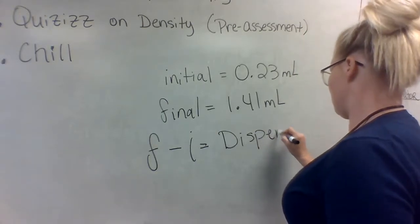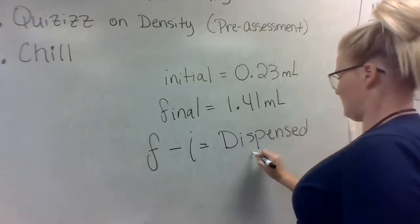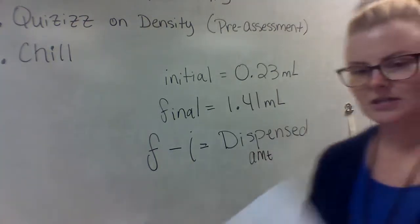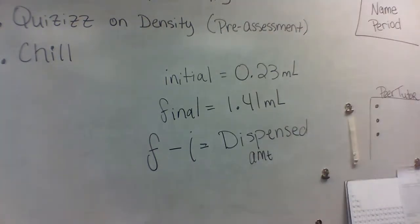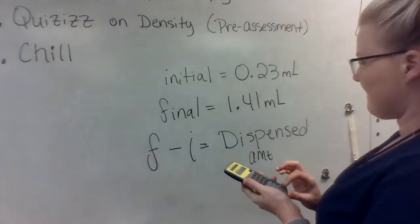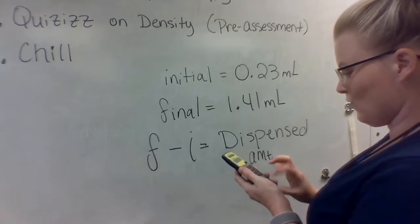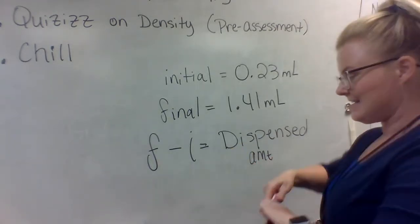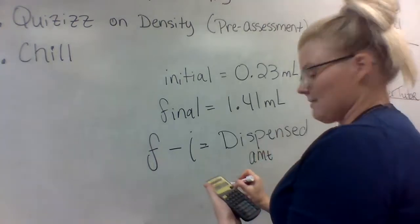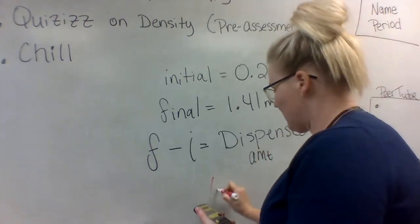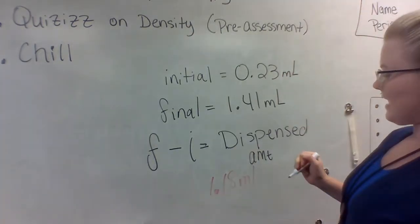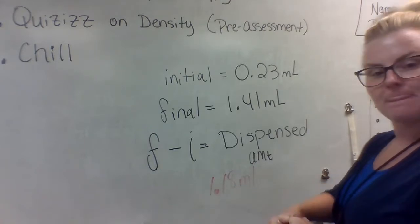So in this case, grab a calculator really fast. I have 1.41 minus 0.23 equals – I dispensed a total of 1.18 milliliters.